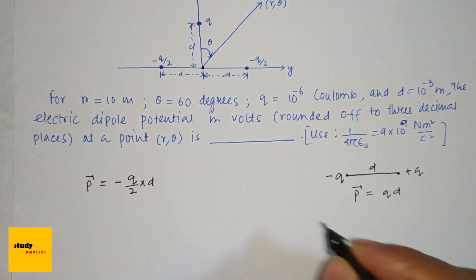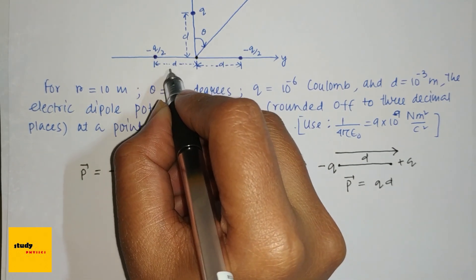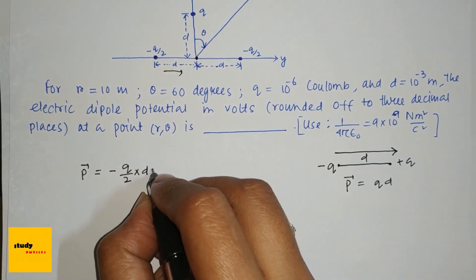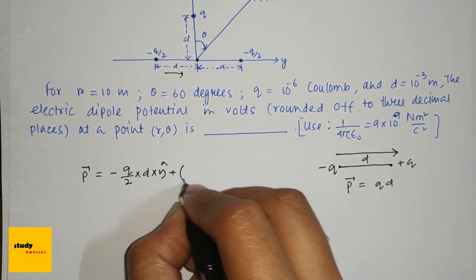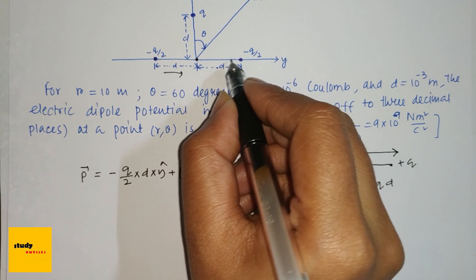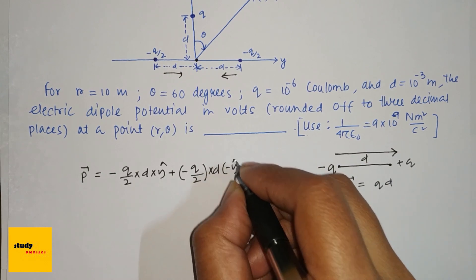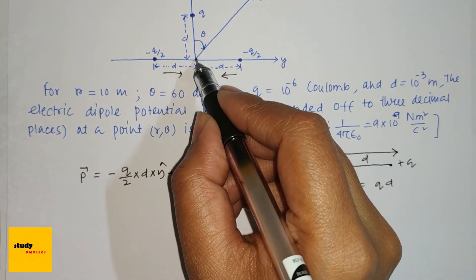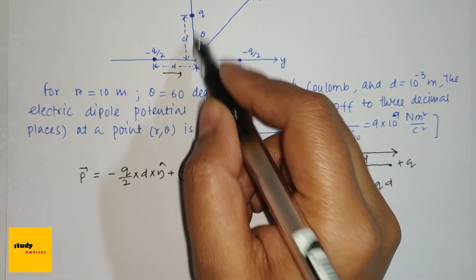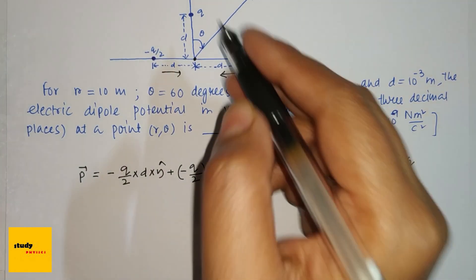The direction of the dipole moment is from negative to positive. So here, the direction of the dipole moment from minus q by 2 is in the positive y direction, giving y-cap. Plus, if we consider the negative charge here, then here is positive q charge and here is negative q charge, which is separated by distance d. So the dipole moment here is q d into z-cap.